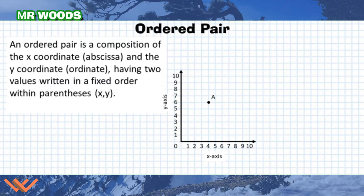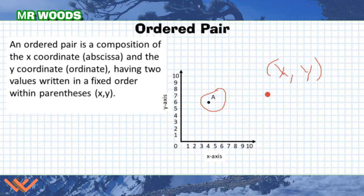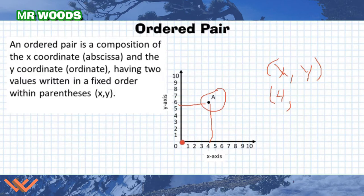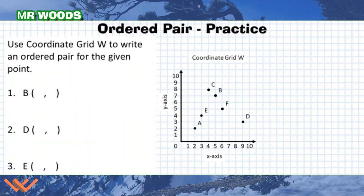Let's take a look at an example. We have point A, and we know we go in x, y order. I need to go in the x-direction first, so I'll draw a line so we know where we're going. We can count over 1, 2, 3, 4 — so the x-coordinate for point A is 4. And then the y-coordinate is 1, 2, 3, 4, 5, 6. So we can write A equals (4, 6) — that's the coordinate pair for point A.